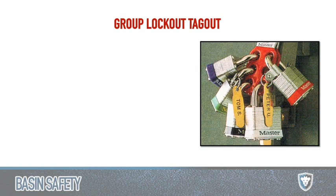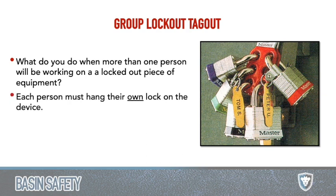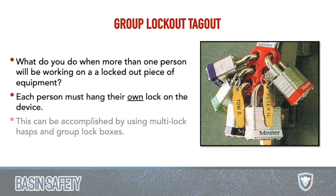If multiple people need to lock out, you can use a hasp, or apply one lock onto the equipment, take the key to that lock, put it inside a lockbox, and have multiple locks lock out the box — which is typically the simplest because it's less stuff out in the field and easier to control. That ensures each person on the lockbox needs to remove their lock before the ultimate key can be taken out to remove the primary lock.